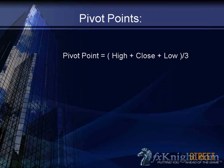A simple moving average weighs all the periods evenly. An exponential moving average puts more emphasis on the most recent periods. In the case of pivot points, unlike a moving average, we're averaging one period. Now, what that period is can vary.